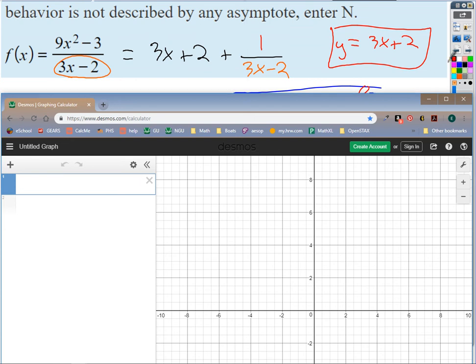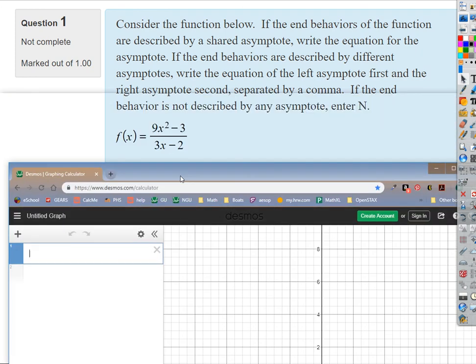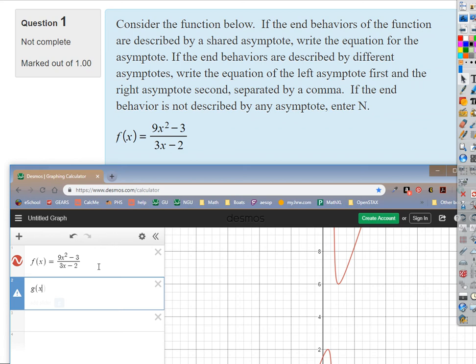So we've got the function 9x squared minus 3 divided by 3x minus 2. So there it is in red. And then let's graph our answer that we got, which was, you guys remember what that was? 3x plus 2. 3x plus 2. Oops. Okay.